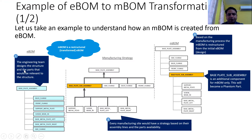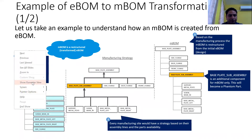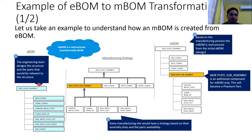The engineering team designs the structure and parts relevant to the product. Now there is a base plate assembly. The base plate assembly has a back flange, front flange, support metal plate, screws, and a base metal plate — right side — totaling one, two, three, four, five, six, seven parts in this assembly. So you can see one base plate assembly designed by the designer with different parts, where the parent assembly has six or seven parts.